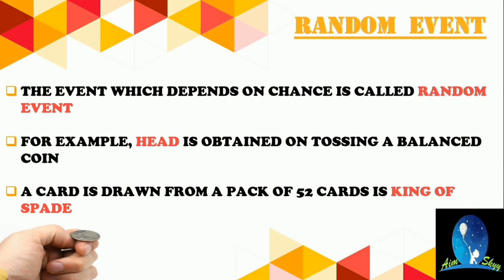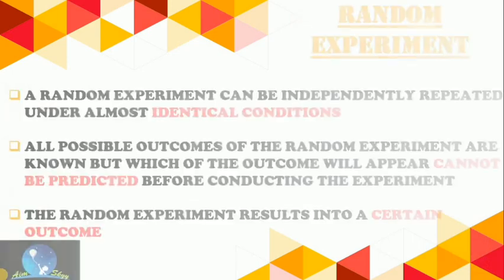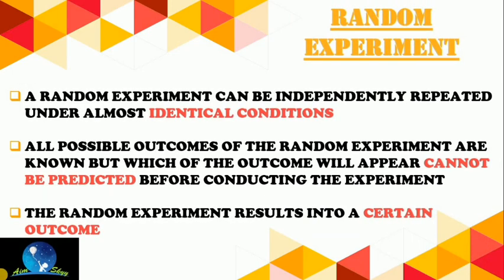Another example: a card drawn from a pack of 52 cards is a king of spades. There are 52 cards and only one king of spades, so there is a chance of getting it. All such events where the outcome is uncertain are called random events. Any doubts or queries, comment below — I will definitely try to solve them.